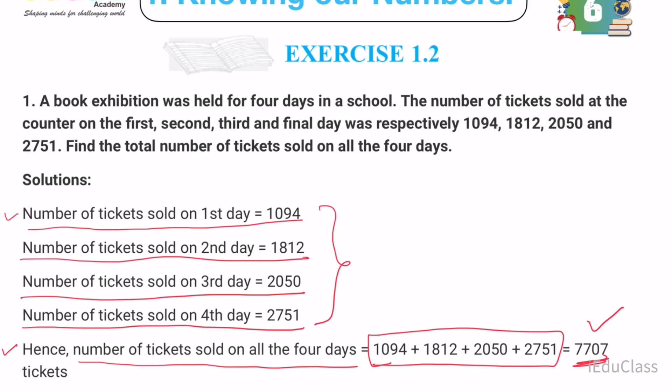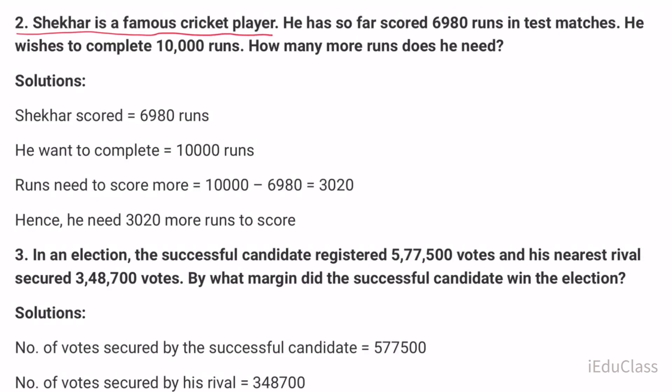Question number two: A famous cricket player has so far scored 6980 runs in test matches. He wishes to complete 10,000 runs. How many more runs does he need?